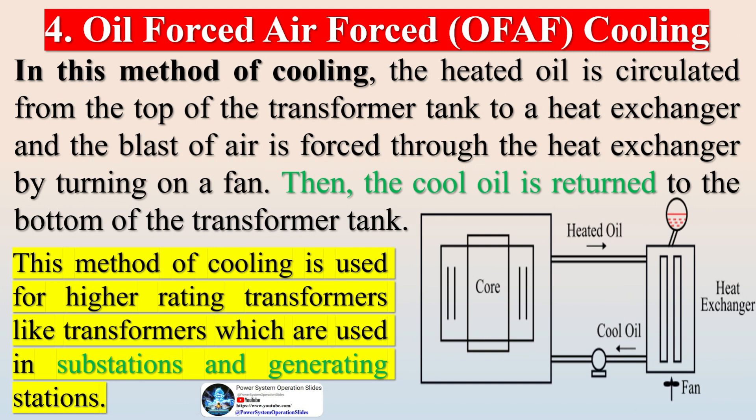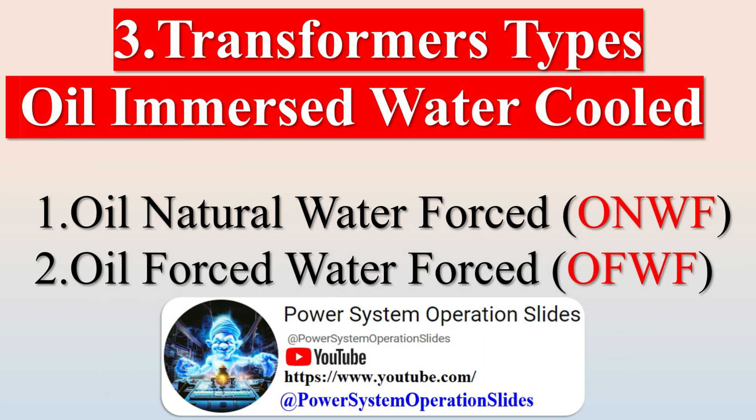In the Oil Forced Air Natural (OFAN) type, copper cooling coils are mounted above the transformer core, fully immersed in the oil. Along with natural oil cooling, heat from the core passes to the copper coils, and circulating water inside the copper coils takes away the heat. The disadvantage of this method is that since water enters inside the transformer, any leakage will contaminate the transformer oil.